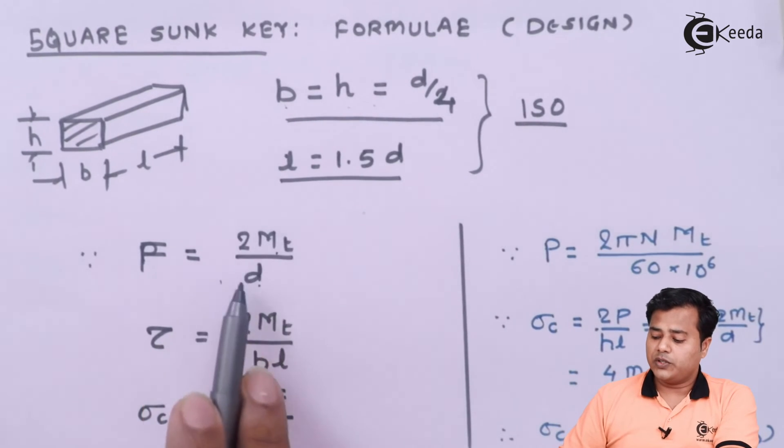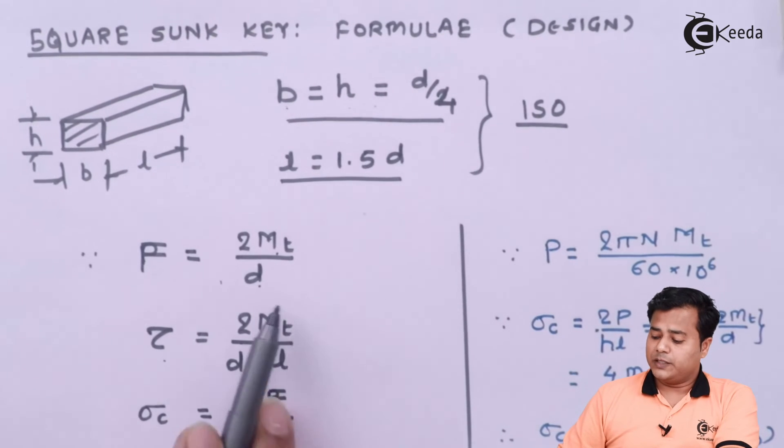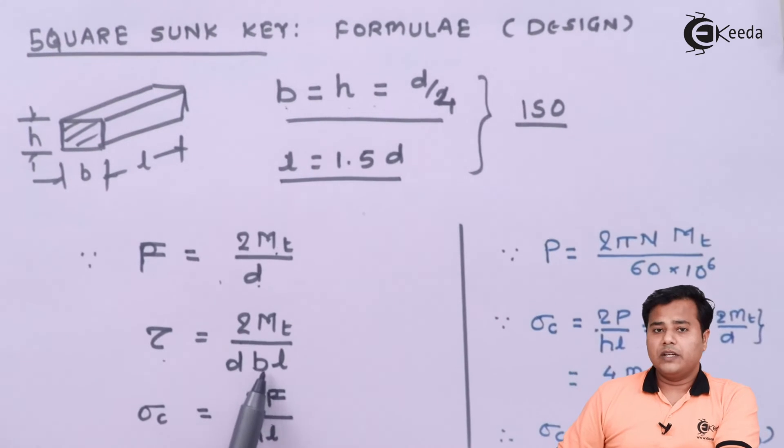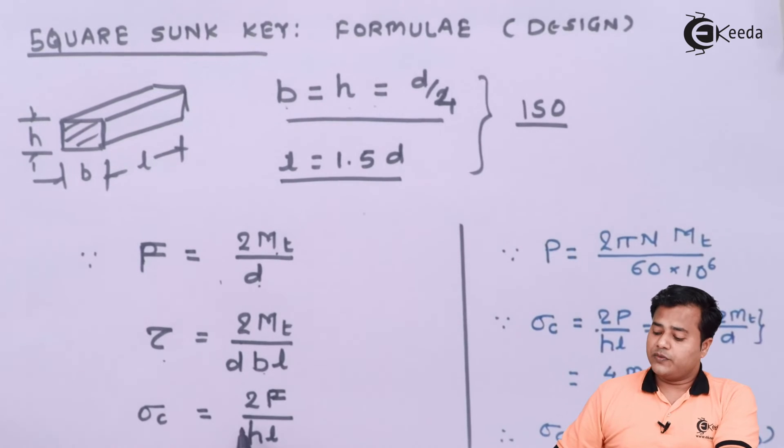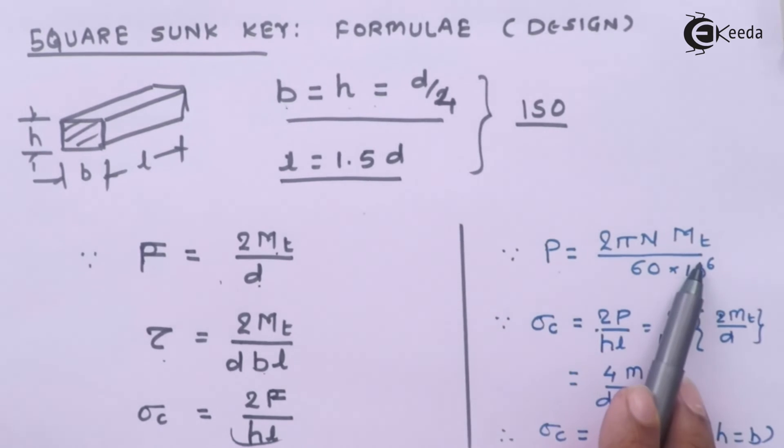The shear stress will be abiding this particular formula where D is the diameter of shaft, B is the width of this key and L is the length of the key. And compressive stress will be given by this formula where F is the force acting on the key, H is the height of the key and L is the length of the key.